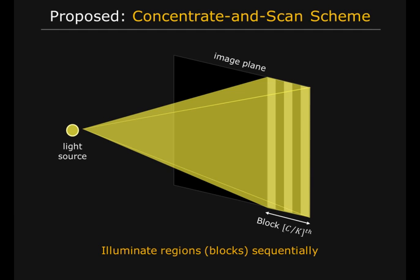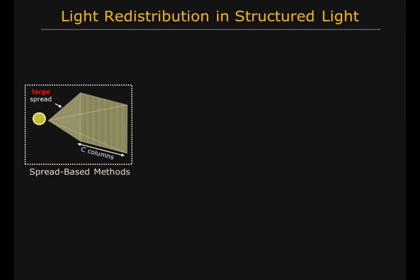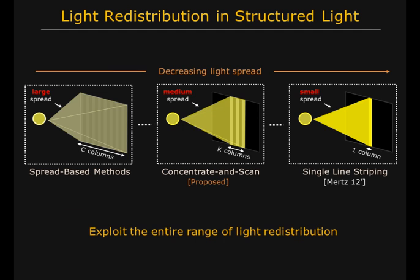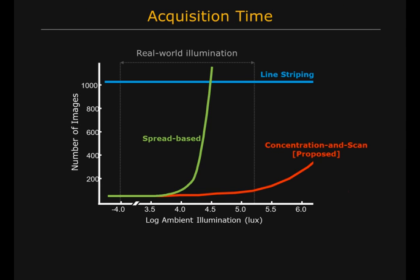Existing methods either spread the light over the entire image plane, or concentrate the light into a single column. As a result, they either achieve low quality results or require long acquisition time. In contrast, we exploit the entire range of light redistribution. We show that by concentrating the light appropriately, it is possible to achieve high quality results in a very limited time and power budget. The proposed method is 10 to 100 times faster than existing schemes in nearly all real outdoor illumination levels.